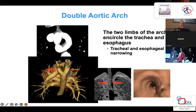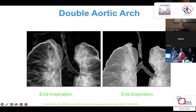A lesion such as the double aortic arch, where two limbs of the arch encircle the trachea and esophagus. This is shown in simple two-dimensional images on CT scan as well as three-dimensional images, virtual and fly-through images of the CT scan — including end-inspiration and end-expiration images — to give a sense of the dynamic effect on the airway.